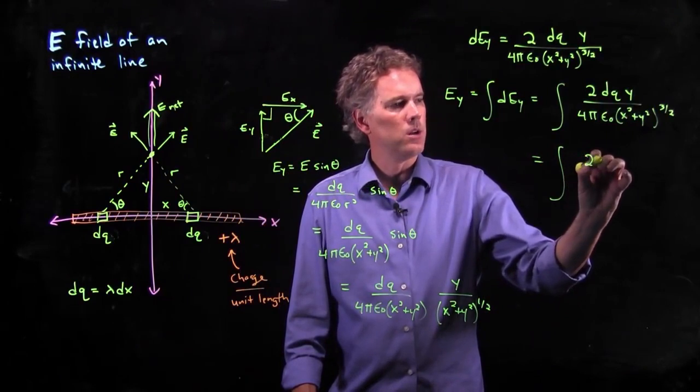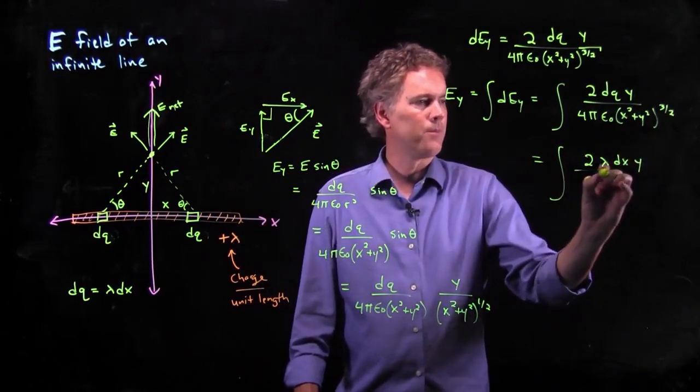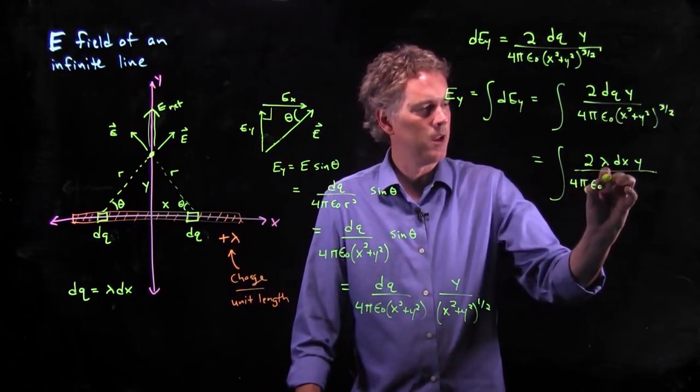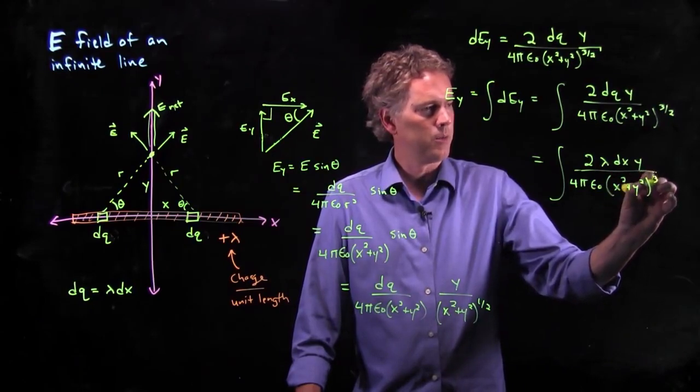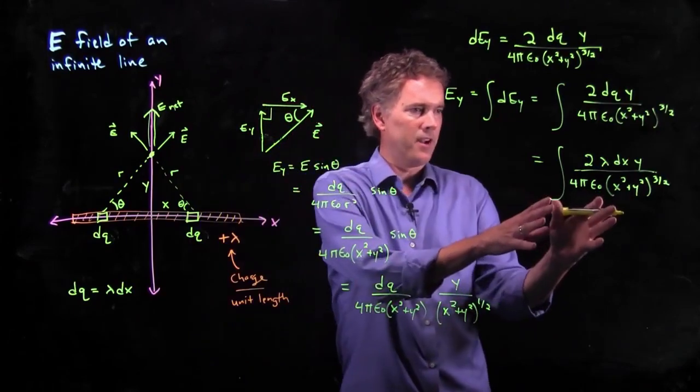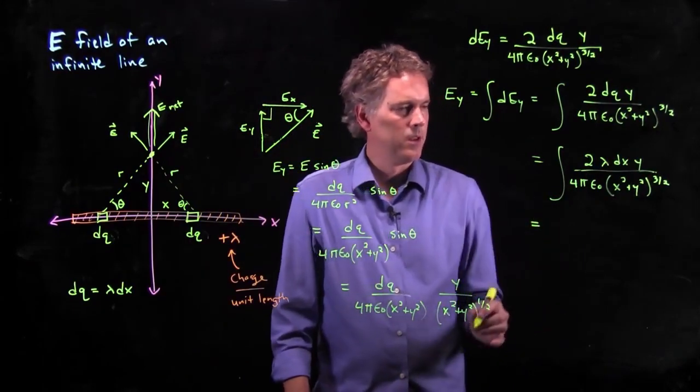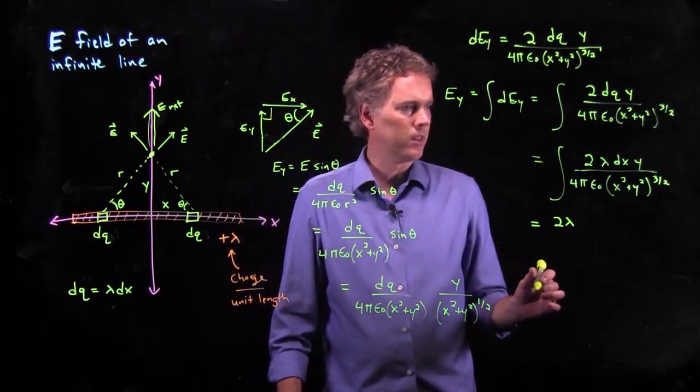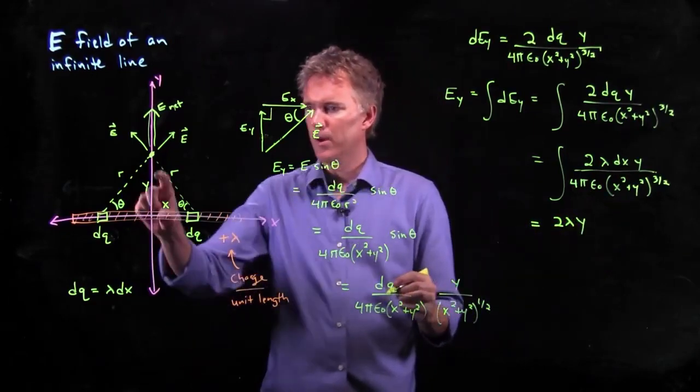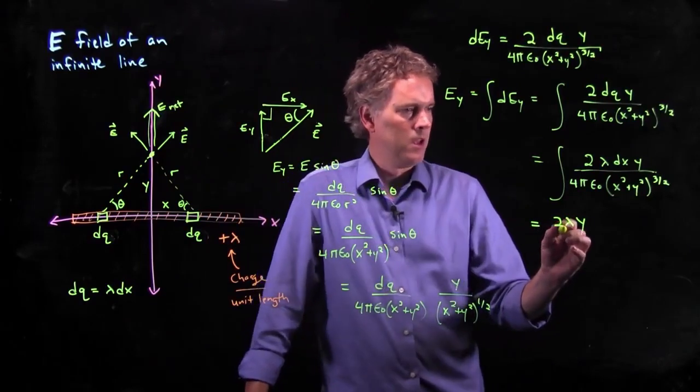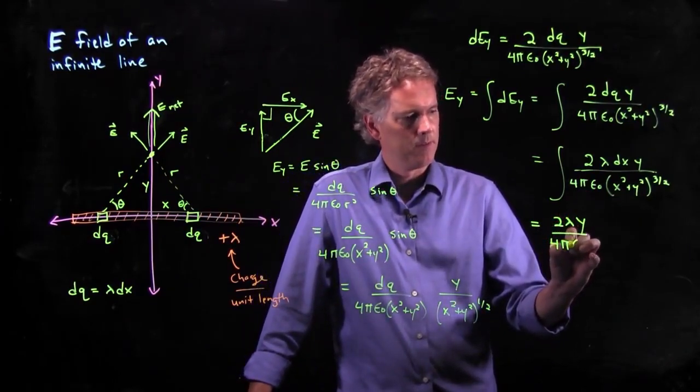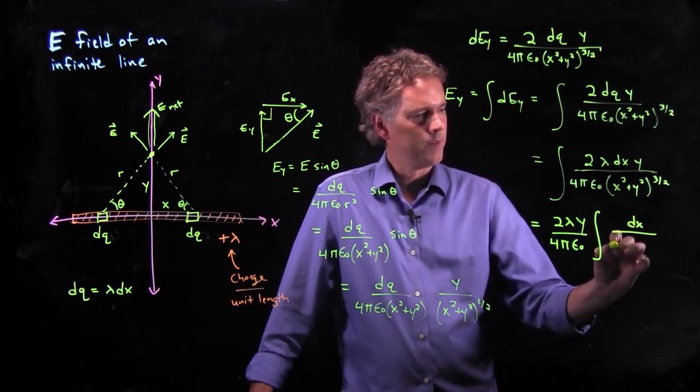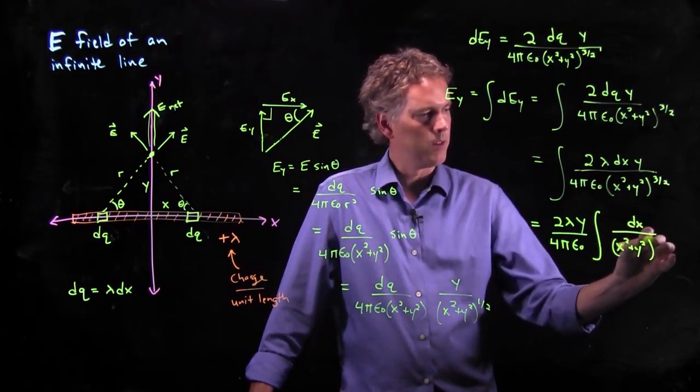So let's rewrite this dq as lambda dx. And let's see what we get. We get 2 lambda dx times y divided by 4π epsilon not x squared plus y squared to the 3 halves. And a lot of this stuff is in fact a constant, and so it can come out in front of the integral. What is a constant? 2 is a constant. Lambda is a constant. That would just be some given amount of charge per unit length. Y is in fact also a constant, right? We are at a fixed height above the line. 4π epsilon not is a constant.